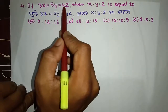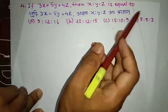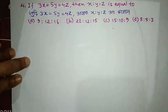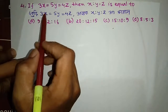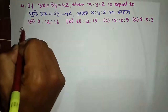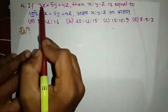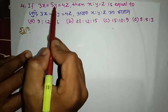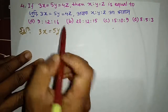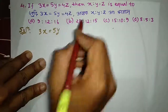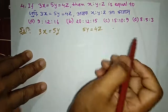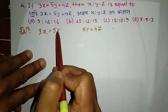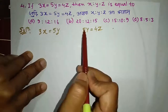If 3x is equal to 5y is equal to 4z, then x equal to y — 3x equals 5y equals 4z. Then 6y equals 5y equals 4z. If 3x is equal to 5y is equal to 4z, if you know 3x is greater than 5y, you can also have less than 5y.